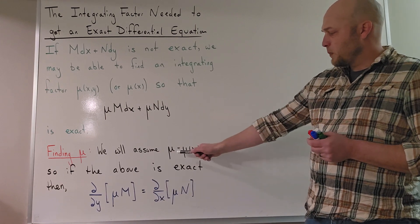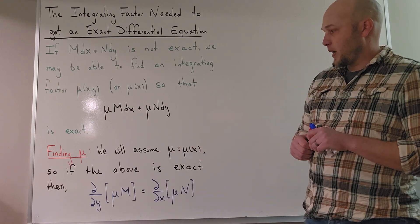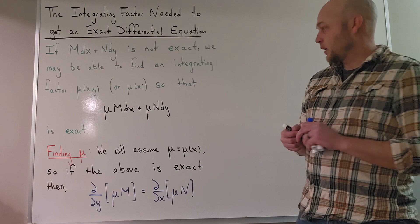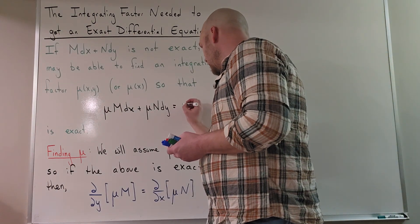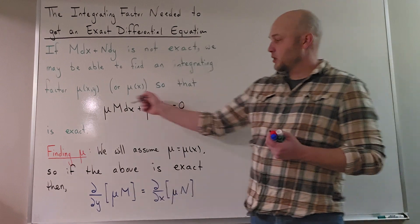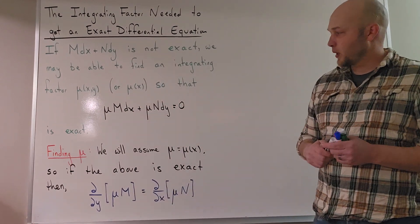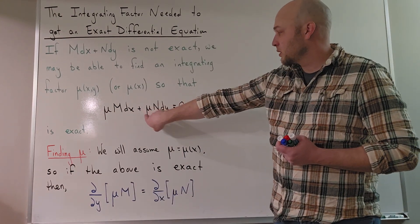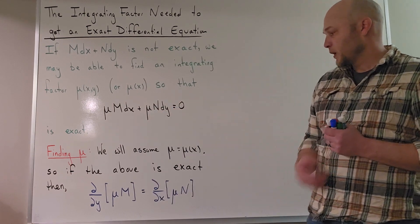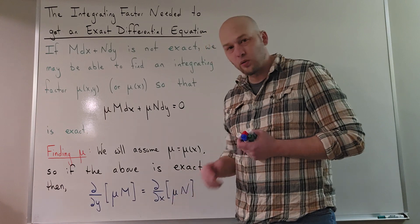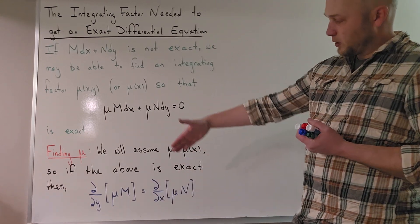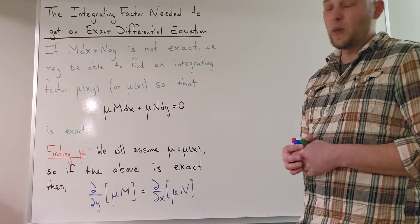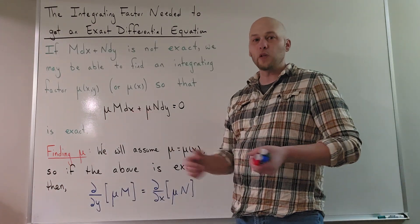Simplifying assumption: we will assume that mu depends on x only. And so if this expression is exact — we could set it equal to zero to refer to it as an equation — if that differential equation is exact, then it must have the following property: the partial derivative of mu·m with respect to y equals the partial derivative of mu·n with respect to x. We're going to assume that's true and then derive a condition on mu, which will allow us to find the integrating factor for a specific example.